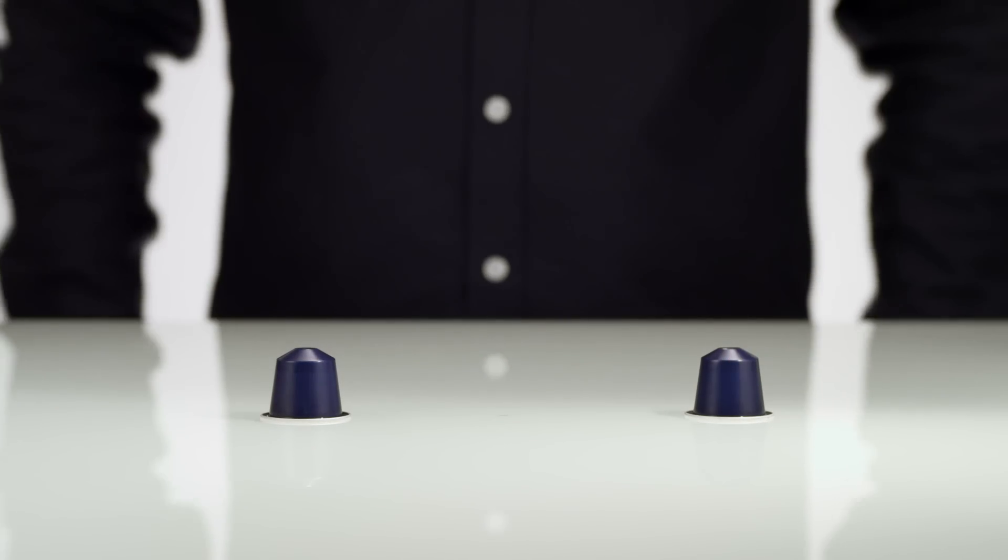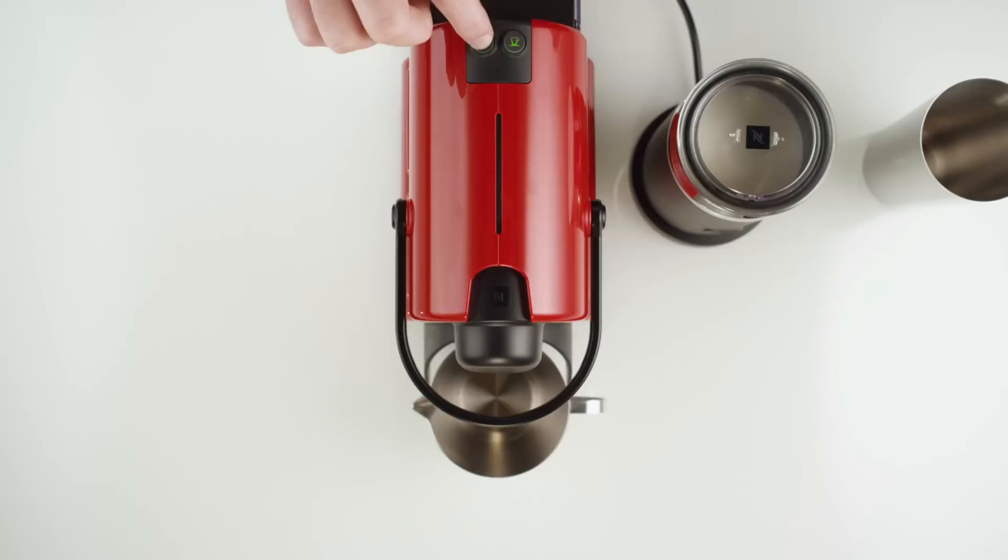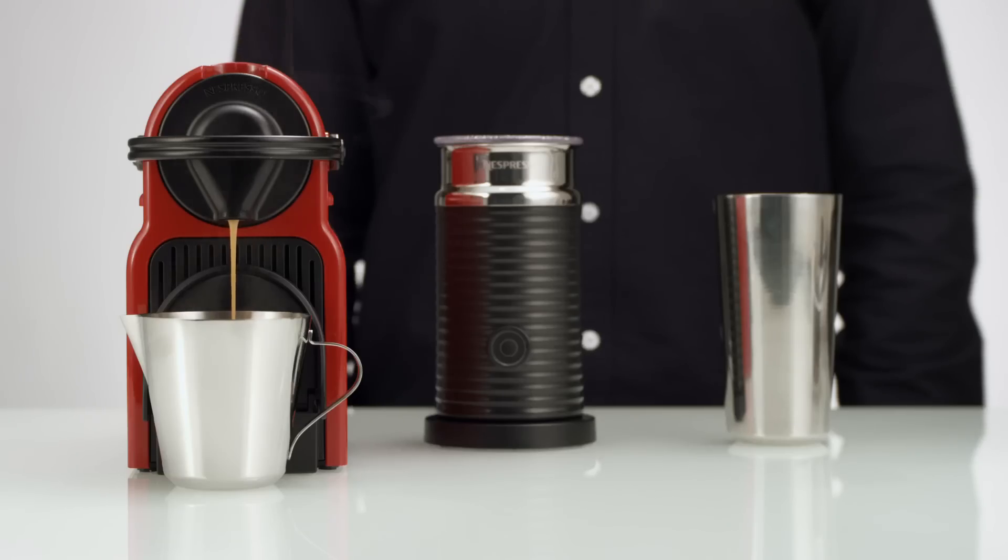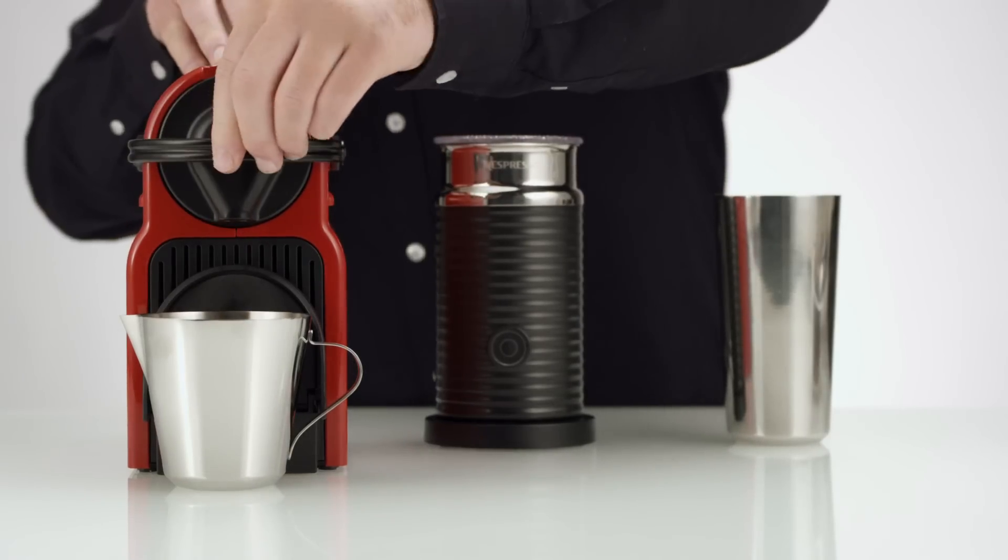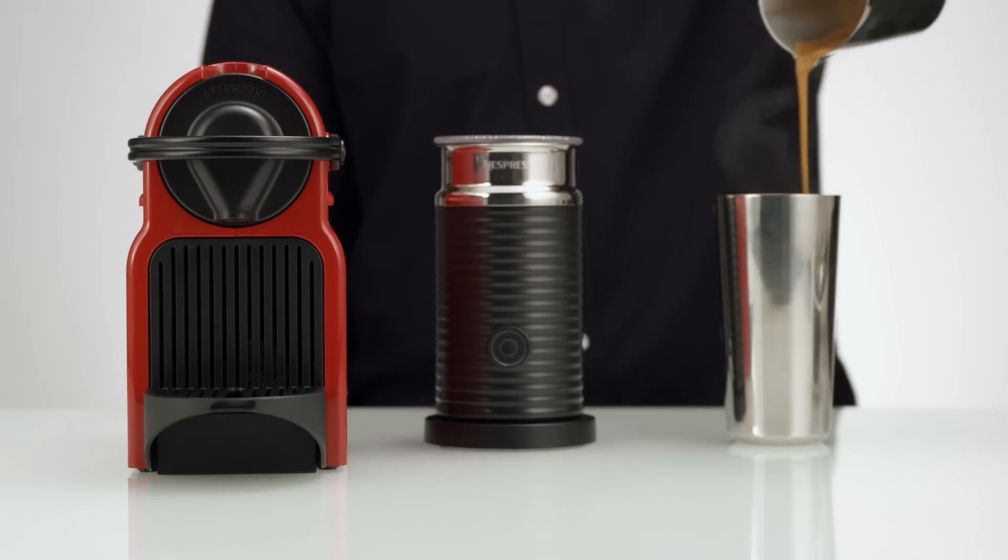Take two capsules of Cousard Grand Cru. Prepare the espressos. Then pour them into the shaker.